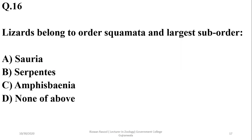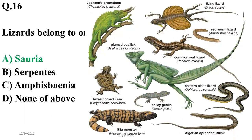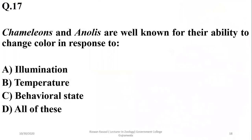Question fourteen: lizards belong to order Squamata, and the largest suborder of Squamata is Sauria, from which lizards belong. Question fifteen: Serpentes includes snakes.